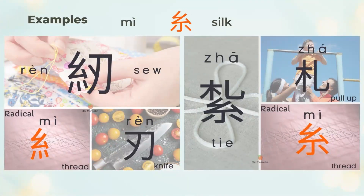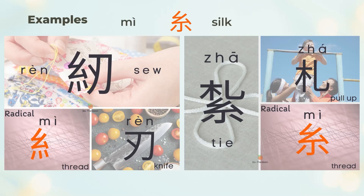纫 means to sew, and we sew with threads. 纫 is the left 糸 (thread) and the right 刃 (knife). 扎 means to tie, and we tie with threads. 扎 is the top 札 (to pull up) and the bottom 糸 (silk or thread). 札 is the phonetic of 扎.